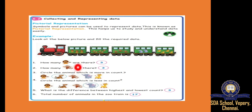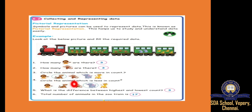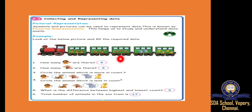How many lions are there? 1, 2, 3 — 3 lions. How many monkeys are there? 1, 2, 3 — 3 monkeys. Circle the animal which is more in count — here 4, 5 are there. 4 tigers — actually 5. So circling tiger. Next, circle the animal which is less in count — only 2 elephants are there, so circling elephant. What is the difference between highest and lowest count? 5 are there and 2 are there, so 5 minus 2 equals 3.